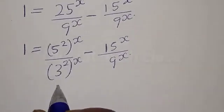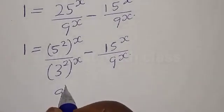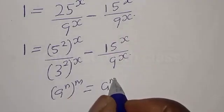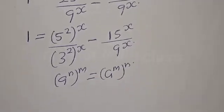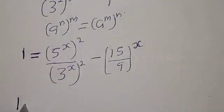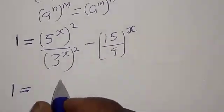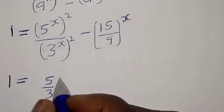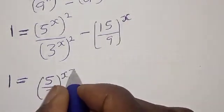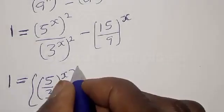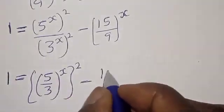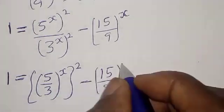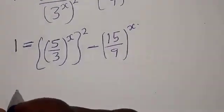Now, if you have a raised to power m over a raised to power n, that simplifies using exponent rules. We get 1 is equal to 5 divided by 3 raised to power s, all squared, minus 15 divided by 9 raised to power s. This is the same as 1 is equal to 5 divided by 3, all raised to power s, all squared.